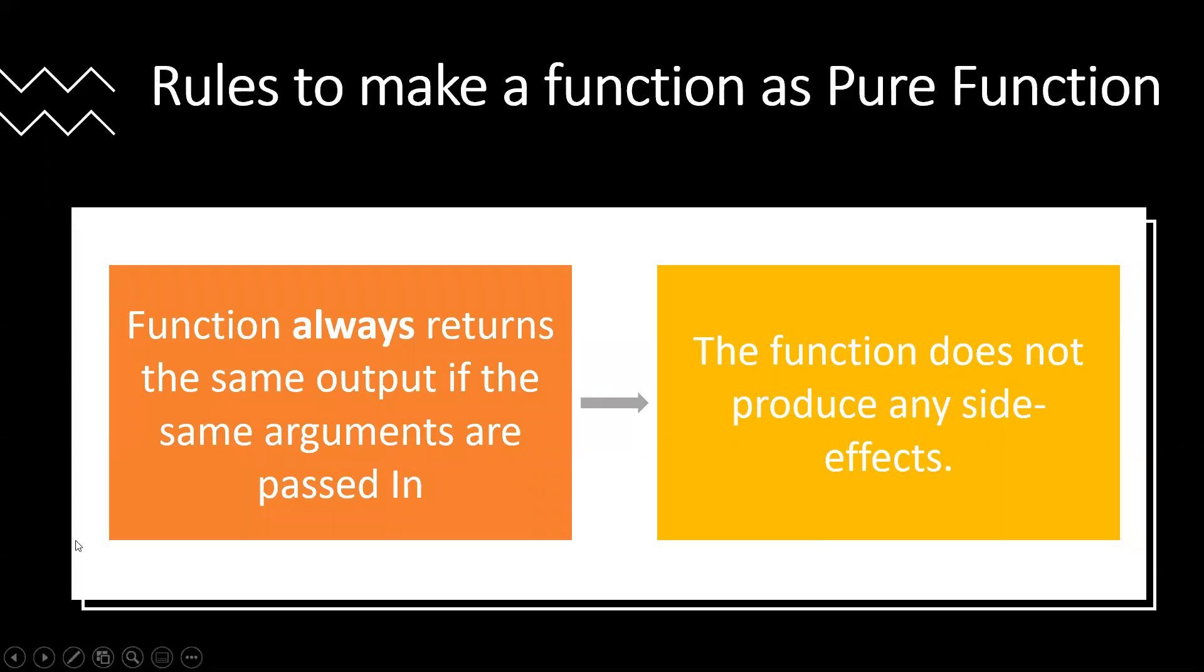What are the rules to make a normal function a pure function? The first rule is a function should always return the same output if the same arguments are passed into that function. The second rule is the function does not produce any side effects.